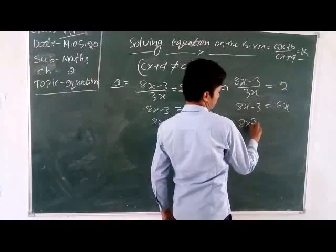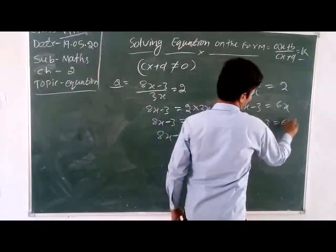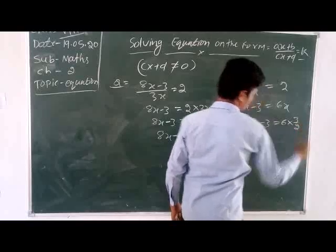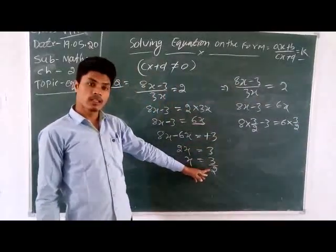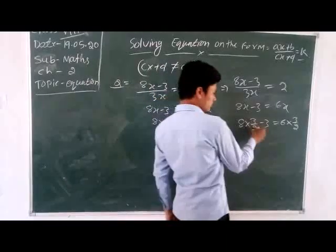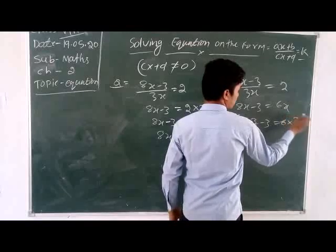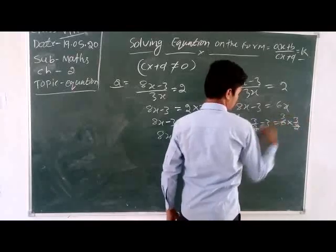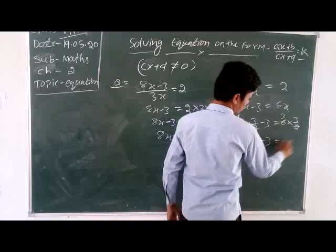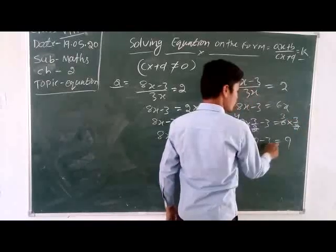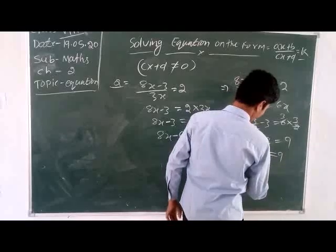For verification: 8x minus 3 divided by 3x equals 2, where x equals 3/2. So: 8 into 3/2 minus 3, divided by 3 into 3/2. That gives: 12 minus 3 divided by 9/2, which is 9 divided by 9/2. This equals 9 multiplied by 2/9, which gives 2. So 2 equals 2 — very correct.